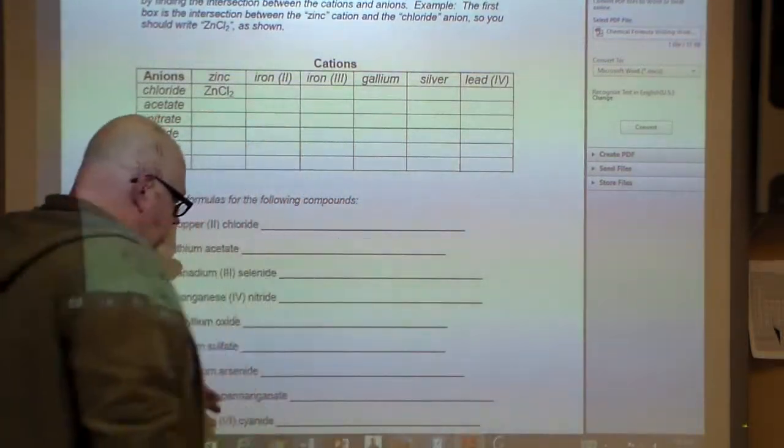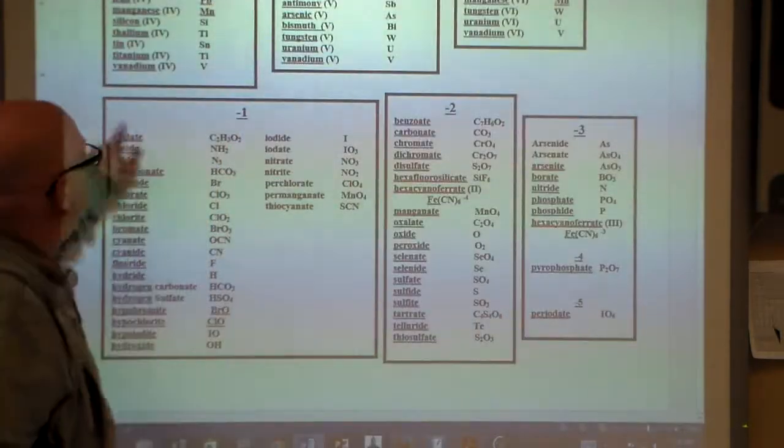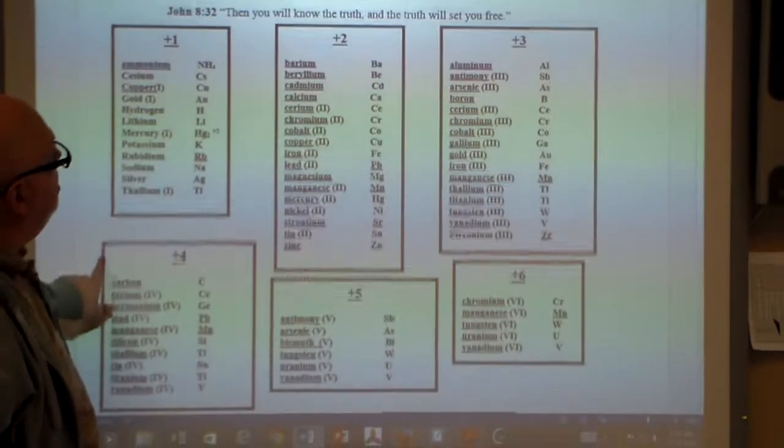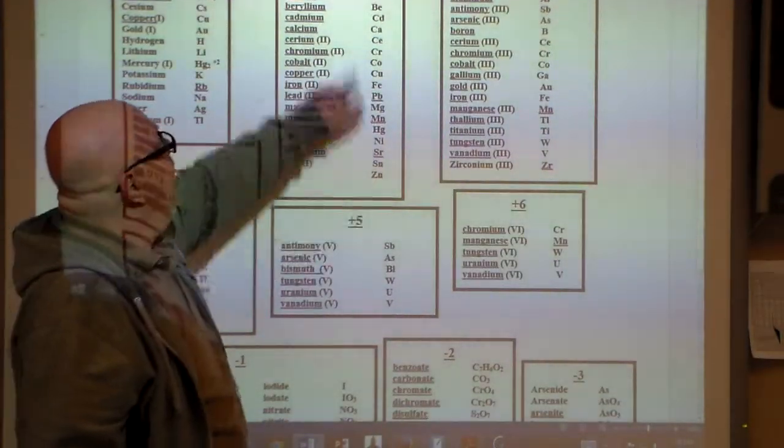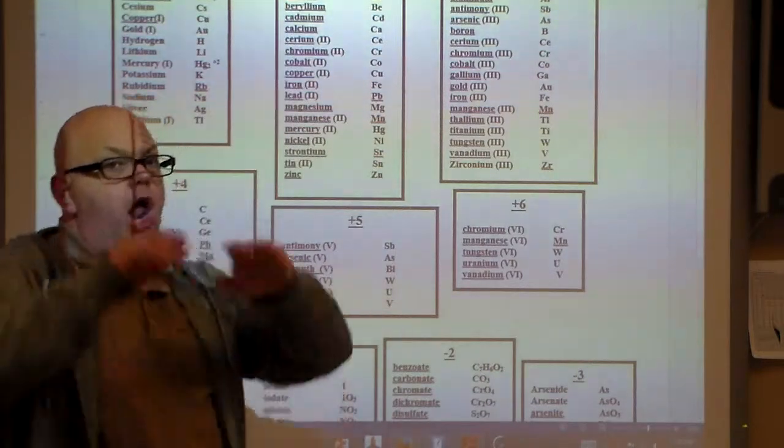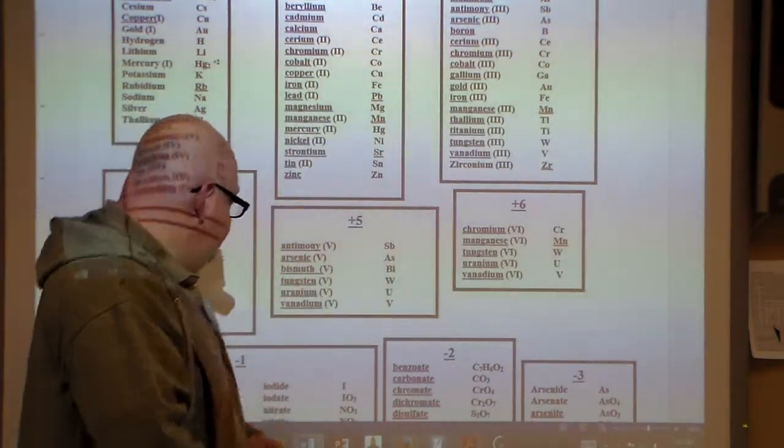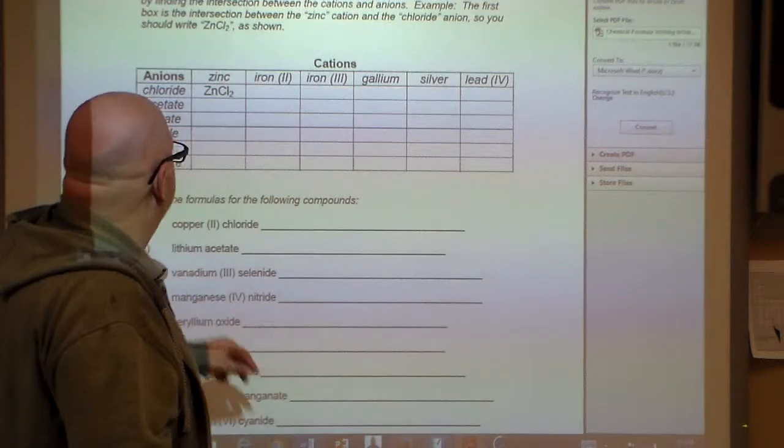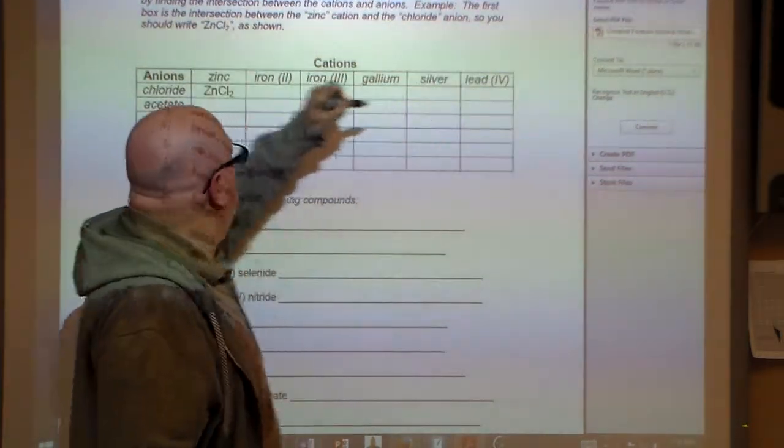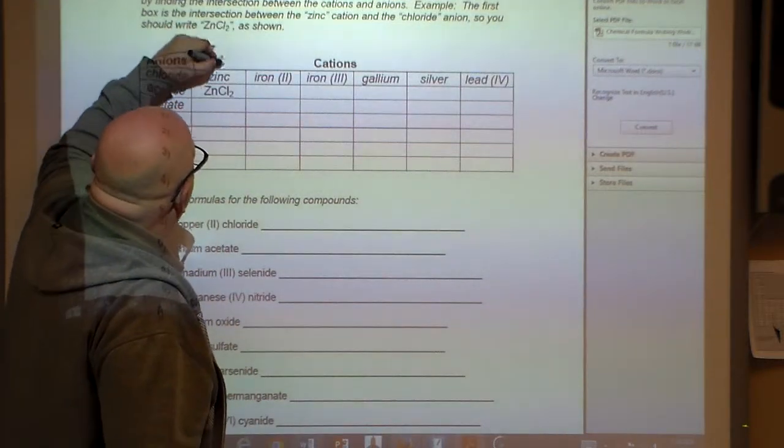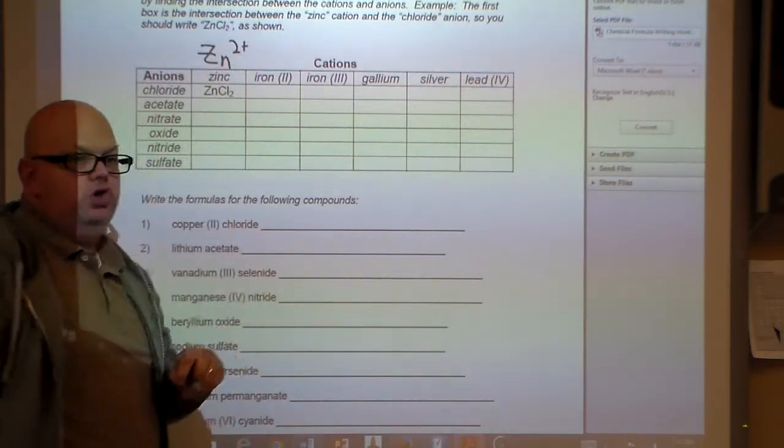If we were to go and look at our chart here, we try to find zinc. Here's zinc right here. It's Zn and it has a plus two charge. Great. So we have Zn with a plus two charge. So I know for my cations which are along this row, I have zinc here with a plus two charge.